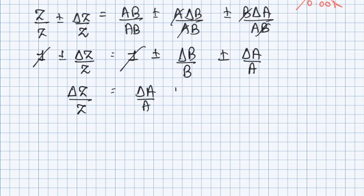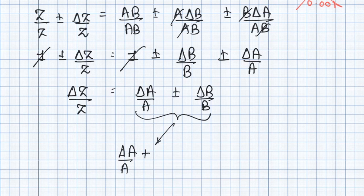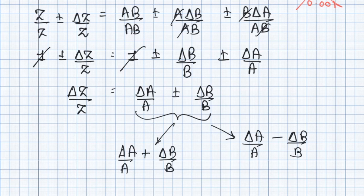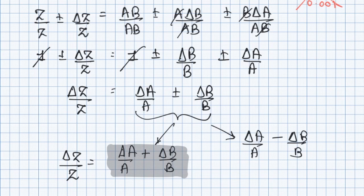We now have two possible values: Δa/a + Δb/b, and Δa/a − Δb/b. As stated earlier, we always consider the maximum value of error. Hence the maximum relative error ΔZ/Z will always equal Δa/a + Δb/b. Similarly, we can prove this for division — so let us see.